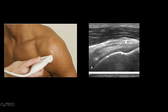In the normal image, we have the subcutaneous fat, then the deltoid muscle as the second layer, then the peribursal fat with no fluid in the subacromial-subdeltoid bursa. All these hyperechoic fibrillar structures are the supraspinatus tendon, and here is the greater tuberosity where the tendon fibers are inserting. Notice there's no anechoic or dark defect in the tendon to suggest a partial or full thickness tear — that's the normal structure.